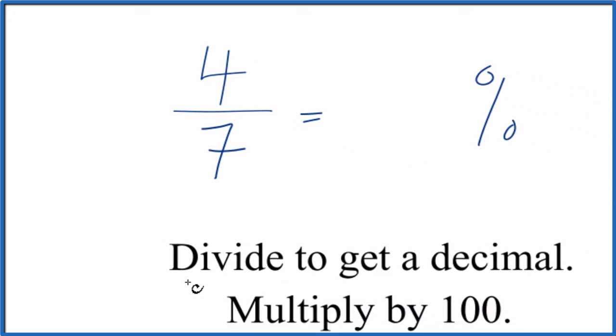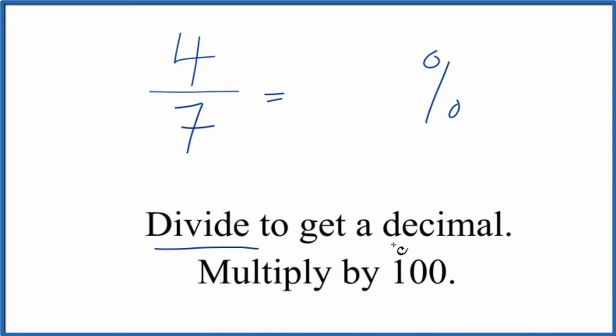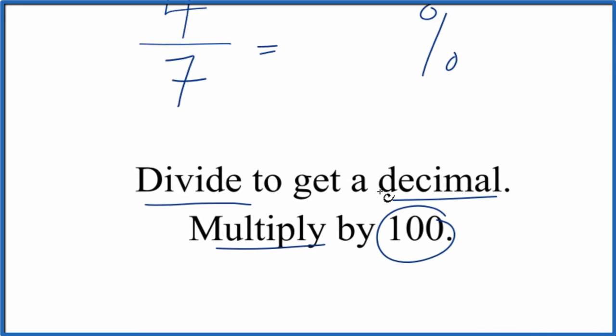The way we can do this: we can divide 4 by 7. That gets us a decimal, and then we just multiply that decimal by 100, and we'll have our percent.